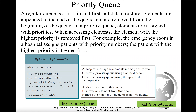A regular queue is a first-in and first-out data structure. Elements are appended to the end of the queue and are removed from the beginning of the queue. In a priority queue, elements are assigned with priorities. When accessing elements, the element with the highest priority is removed first.